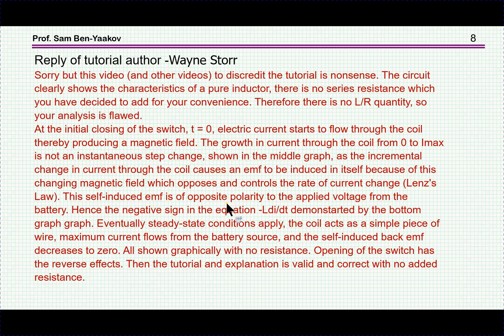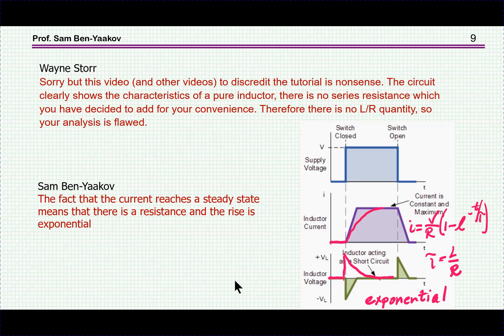The author replied, and here is his reply which disagrees with what I'm saying. So I'm going now to analyze this reply and see what we can make out of it. It says: Sorry, but this video and other videos, apparently other people also alerted the author to the problem in his explanation, to discredit the tutorial is nonsense. The circuit clearly shows the characteristics of a pure inductor. There is no series resistance which you have decided to add for your convenience. Therefore there is no L over R time constant quantity, so your analysis is flawed.